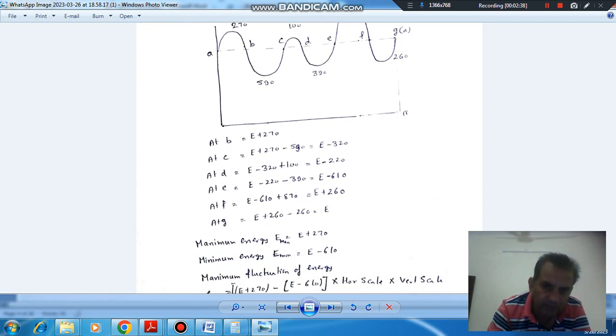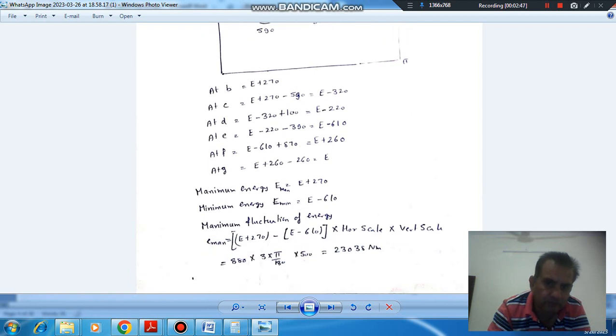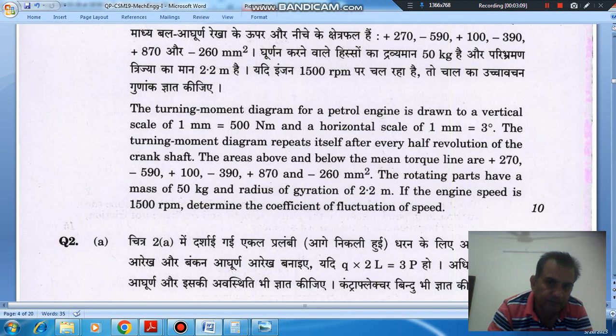We can see that the maximum energy is E plus 270 and minimum energy is E minus 600. So maximum fluctuation of energy, the subtraction is 870. Now this is based on area, so we will add horizontal scale as well as vertical scale. 1 mm in horizontal scale represents 3 degrees or 3 by 180 times pi radians, and in vertical scale it represents 500 Nm.